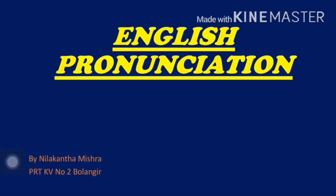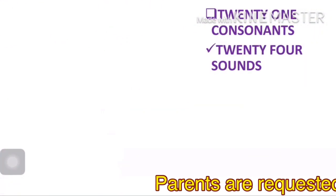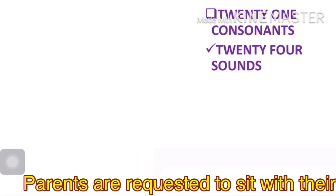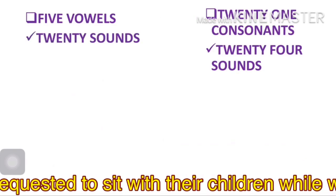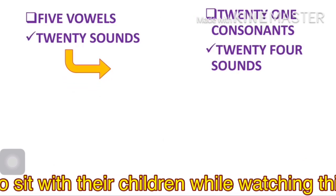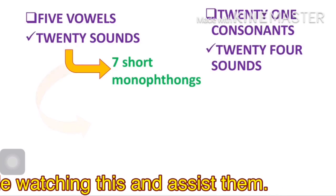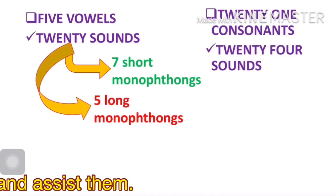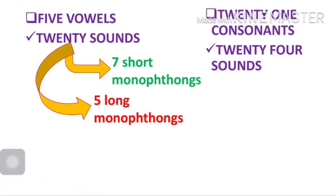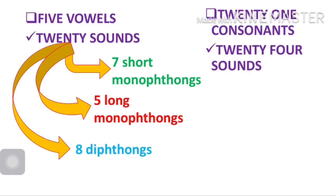Welcome to today's class on English pronunciation. We have already discussed many things — there are 21 consonants in English which have 24 sounds, and 5 vowels which have 20 sounds. We covered 7 monophthongs (single vowel sounds) in the first class, and 5 long monophthongs in the second class. Today we are going to discuss eight diphthongs, that is double vowel sounds.